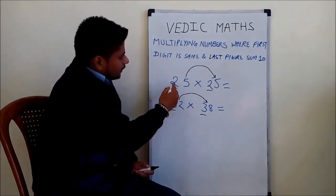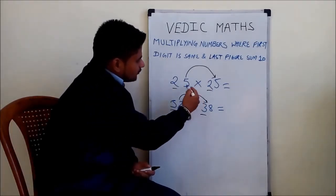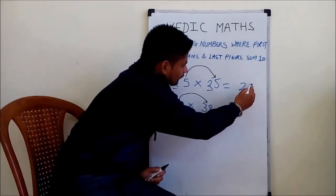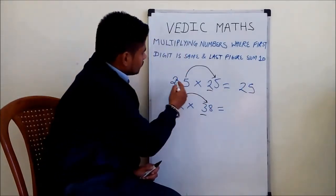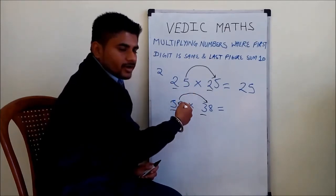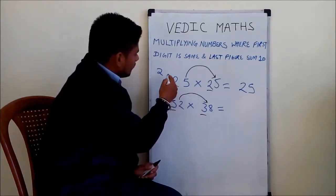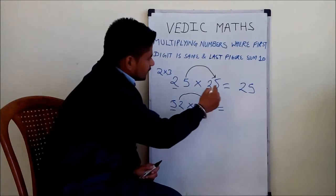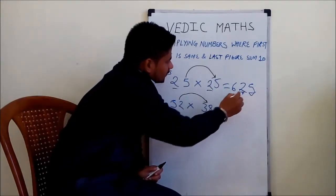How do we multiply? We simply multiply the last two digits: 5 into 5 equals 25. The first digit is 2, so we multiply it with the next consecutive number: 2 into 3 equals 6. The answer is 625.